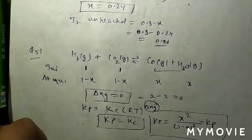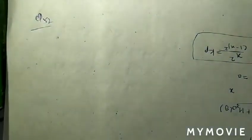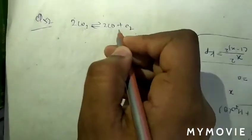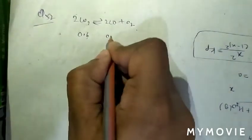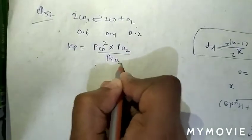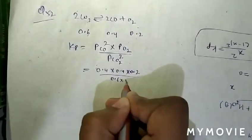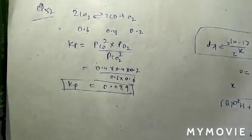Question 52: 2CO₂(g) ⇌ 2CO(g) + O₂(g). Equilibrium pressures are 0.6 atm for CO₂, 0.4 atm for CO, and 0.2 atm for O₂. Kp = (P_CO)² × P_O₂ / (P_CO₂)² = (0.4)² × 0.2 / (0.6)² = 0.089. Question 52, option A is correct.